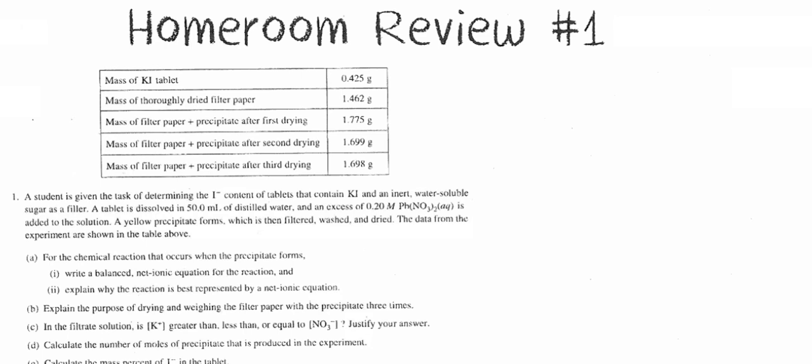You see the mass of potassium iodide tablet, and then mass of thoroughly dry filter paper, so I have a filter paper, mass of filter paper and a precipitate after first, second, and third drying. So I'm going to have to interpret some of these numbers, but I'm going to have to probably refer to it quite a bit.